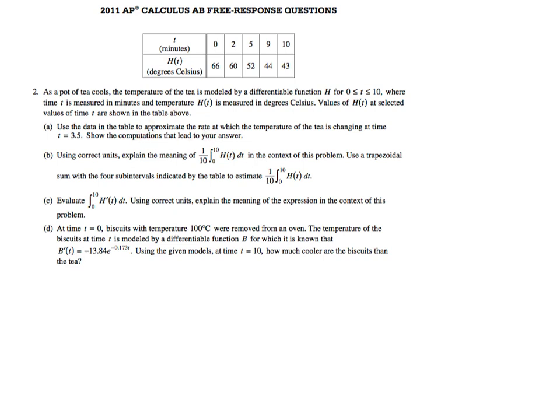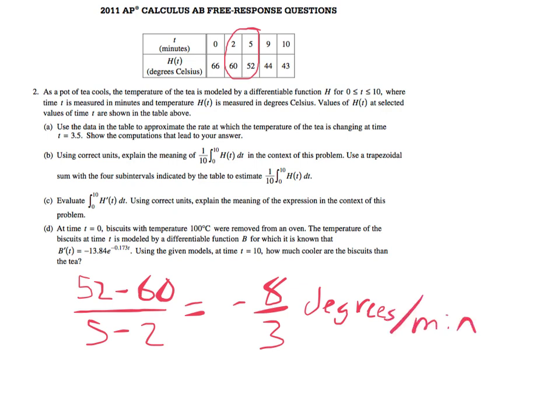So let's just show them the calculations. For part A, we're just going to do 52 minus 60 over 5 minus 2. Literally just calculating the slope between these two points. And when we do that, we get negative 8 over 3. And that's going to be degrees per minute. And that's all. So that's part A.